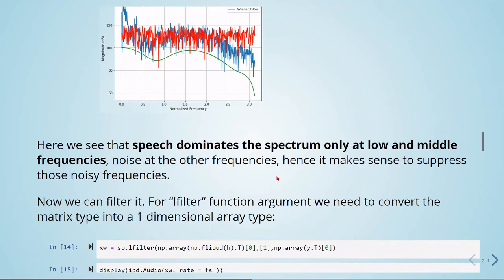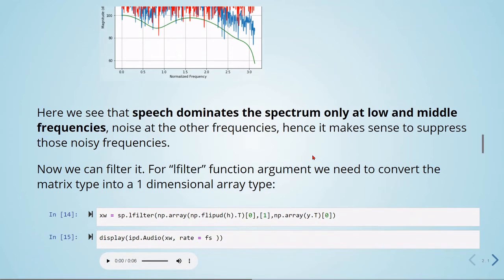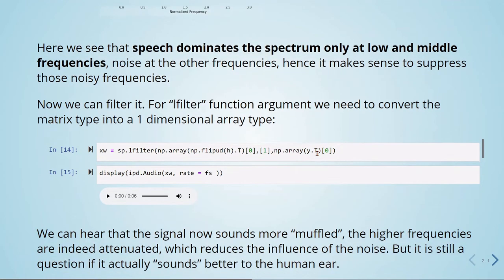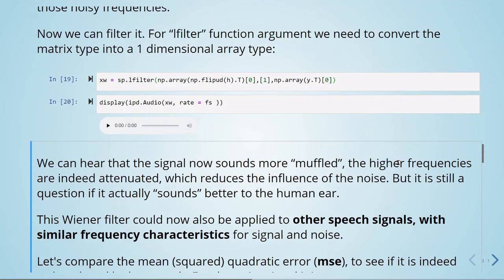Now we can use lfilter to filter. We need to convert the matrix back to a one-dimensional array, and this is how we are using filter here. We are flipping the impulse response, transforming it into an array, also transform our Y back into an array. We are applying the lfilter from SciPy Signal.